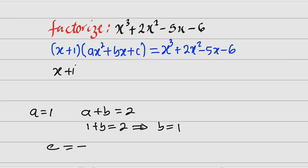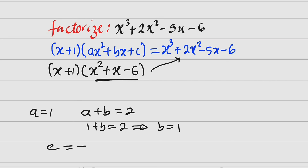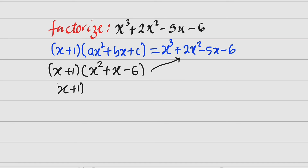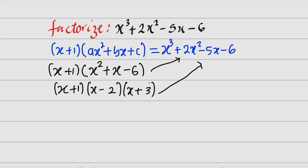This is equal to x plus 1, multiplied by — since a equals 1 we have x squared; since b equals 1 we have plus x; then minus 6. This is the factorized form, but x squared plus x minus 6 is also a quadratic which we can factorize further. We have x plus 1 multiplied by two factors in x: we need two numbers that multiply to negative 6 and add to 1 — the middle term coefficient. The numbers are negative 3 and positive 2, giving the complete factorized form of this cubic polynomial.